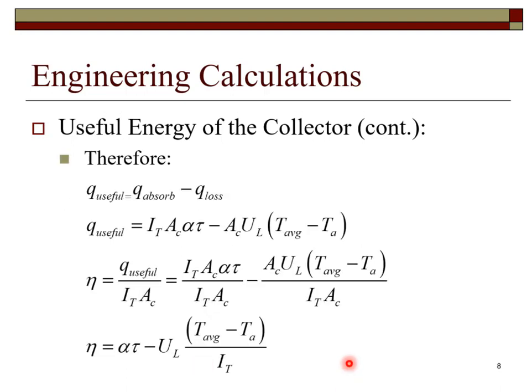The development of the equation continues here on slide 8. We repeat the equation that the useful heat is equal to the heat absorbed minus the heat loss. We will now substitute in the equations we developed for the heat absorbed and heat loss. This gives us equation in line 2.